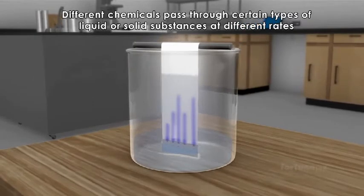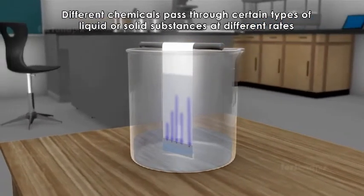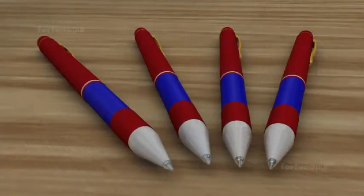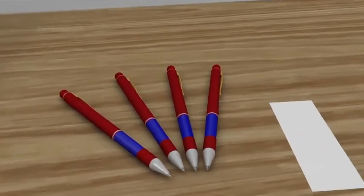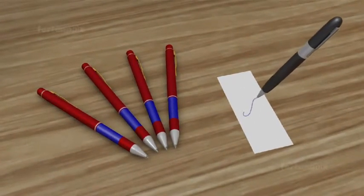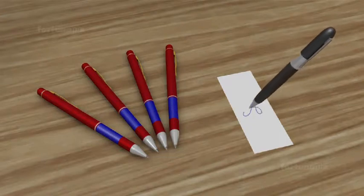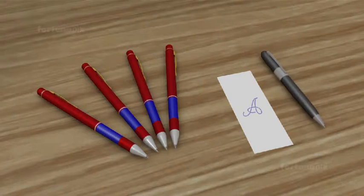For example, you have four similar blue ink pens and you wish to find out which of the four pens' ink is similar to the ink from a pen that was used to create a writing sample. The ink sample can be determined by paper chromatography.